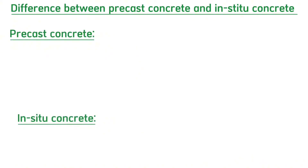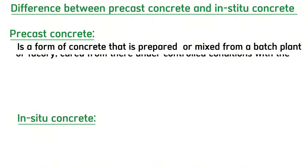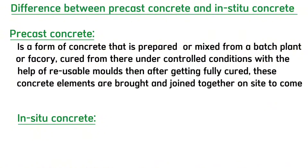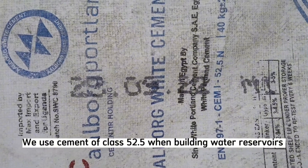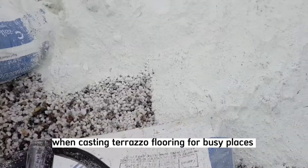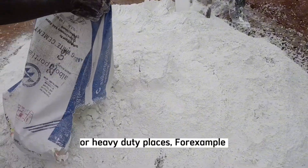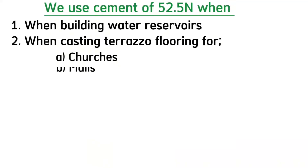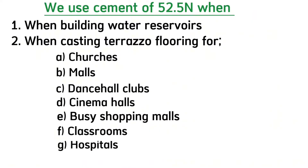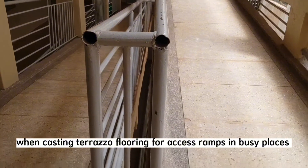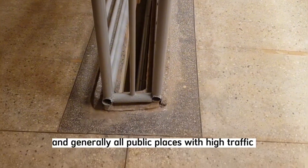Precast concrete is concrete that is prepared or mixed from a batch plant or factory, cured under controlled conditions with reusable molds, then brought and joined together on site to form a complete structure. In-situ concrete, on the other hand, is mixed and poured on site in its permanent location — everything is done on site. We use cement of class 52.5 when building water reservoirs and when casting terrazzo flooring for busy or heavy-duty places such as churches, malls, dance halls, cinema halls, busy shopping arcades, classrooms, hospitals, access ramps, and generally all public places with high traffic.